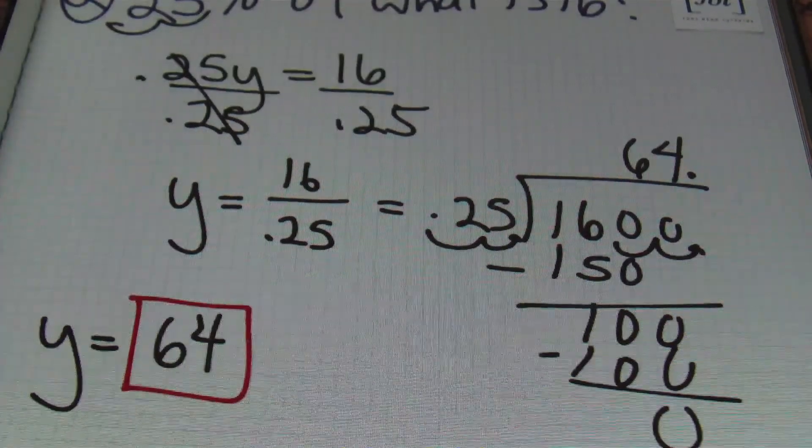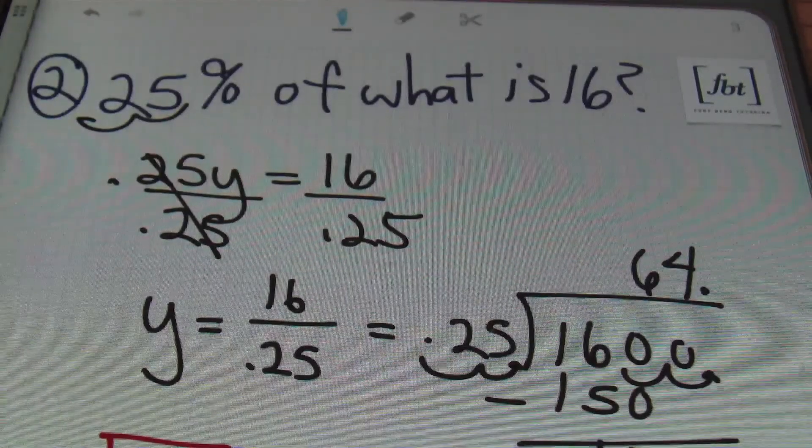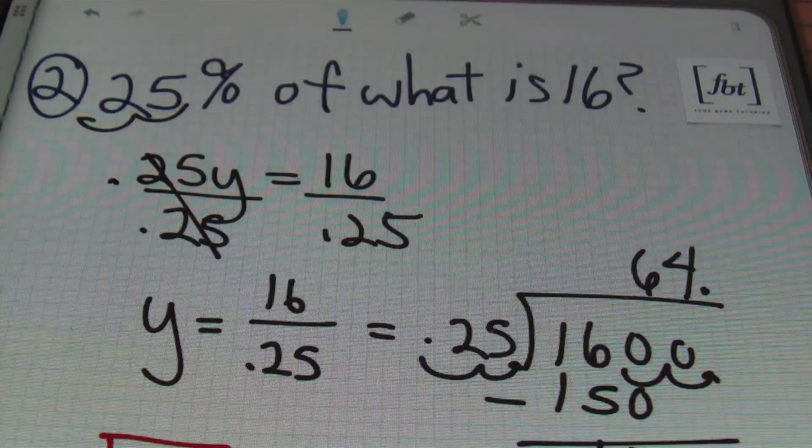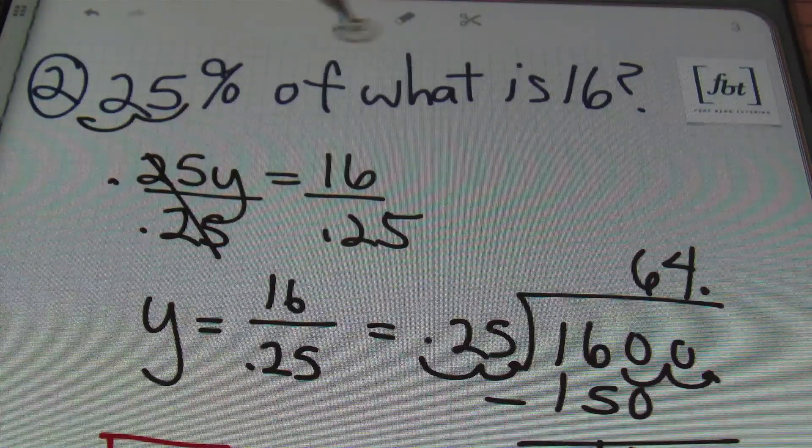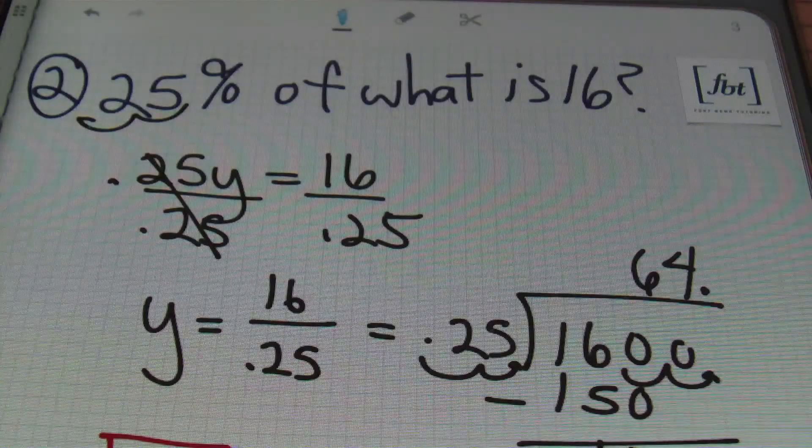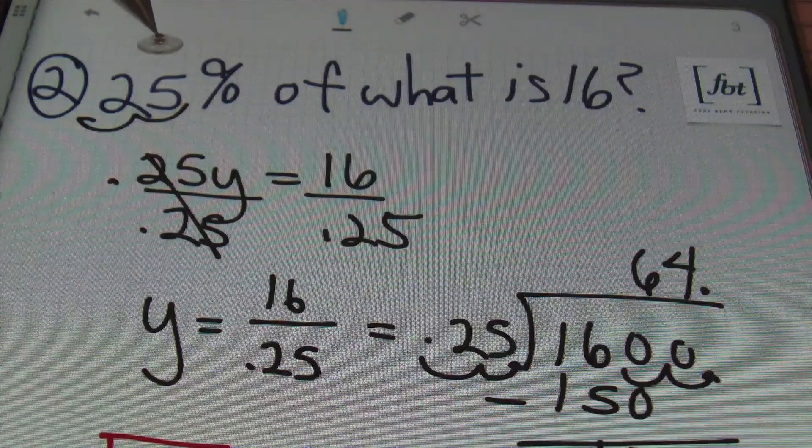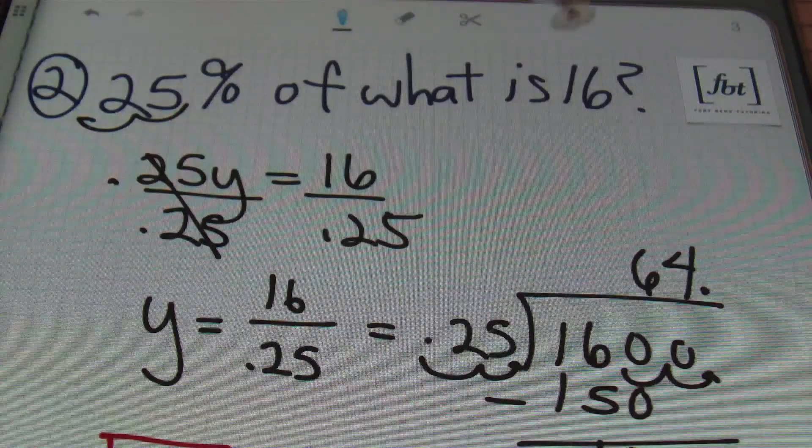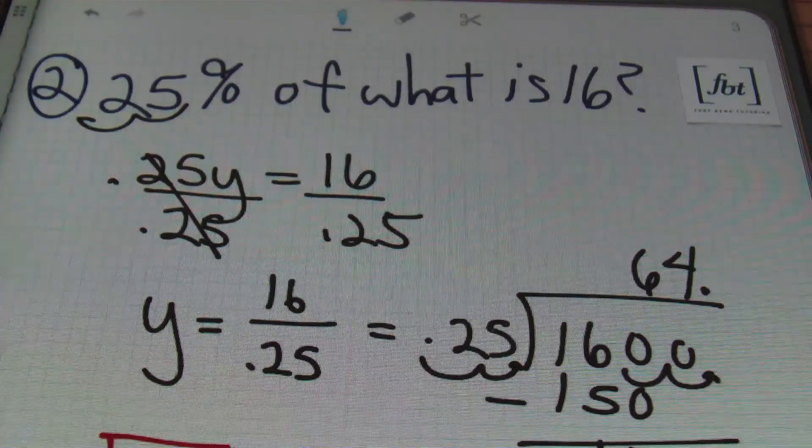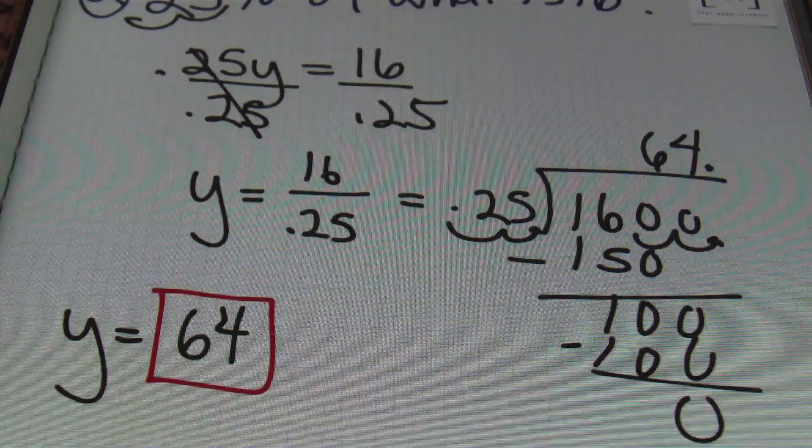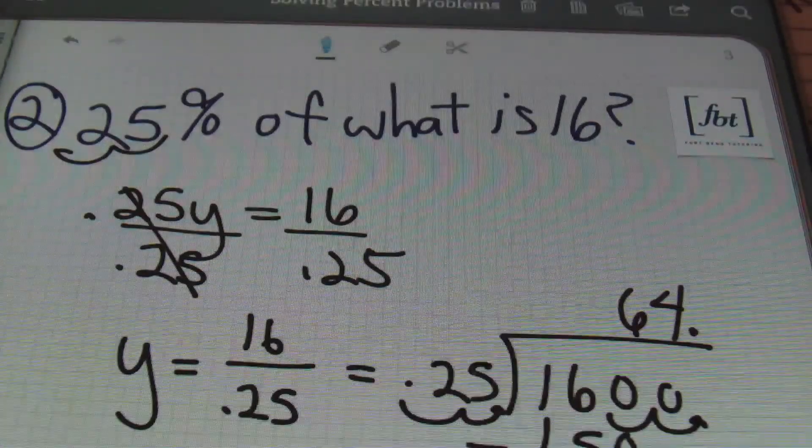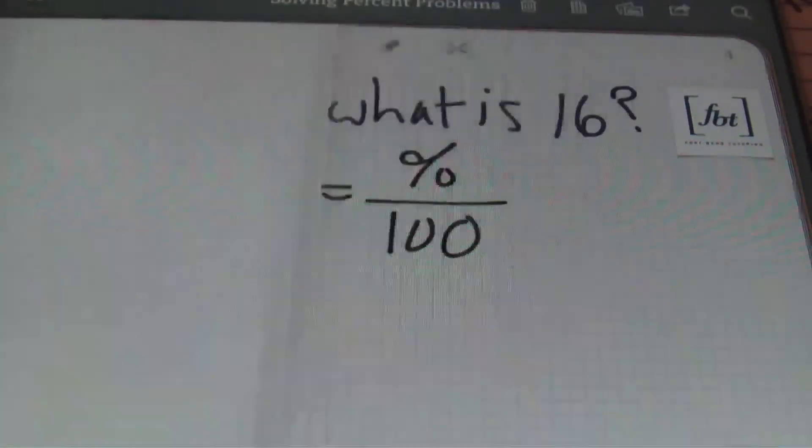So 64 is the result. Let's see if that makes sense when I plug it in. So 25% of what is 16? Well, 25% of 64 is 16. That makes sense because 25% is like divided by 4, and 64 divided by 4 is 16. So y equals 64.